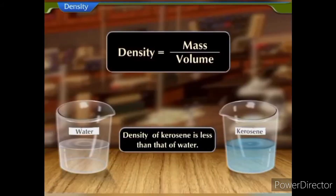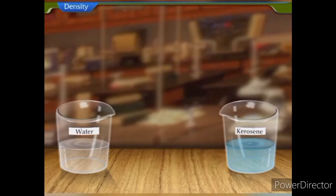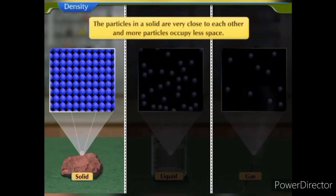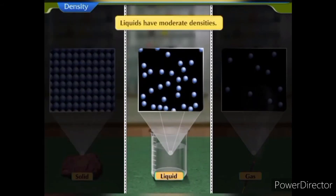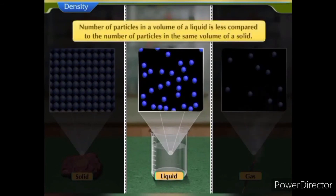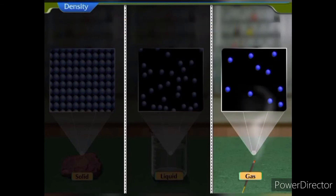Let us understand the concept of density. Density is the ratio of mass to volume. Solids generally have very high densities. The particles in a solid are very close to each other and more particles occupy less space, hence they are heavy. Liquids have moderate densities, generally lesser than solids, because the number of particles in a volume of liquid is less compared to the same volume of solid. Gases have very low densities as particles of a gas are far apart from each other — they are hence very light.